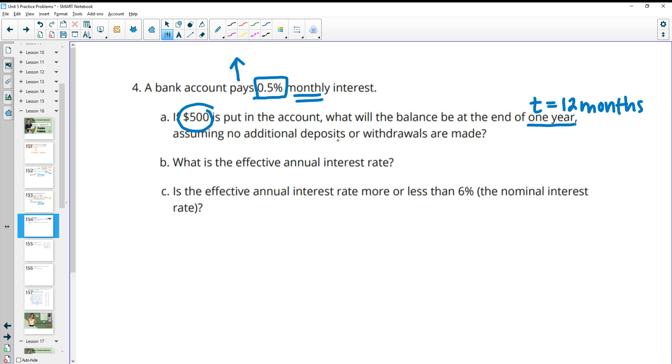So for this, we have the initial amount, 500. Then we want to take it times our growth factor to the 12th power for 12 months. So remember when we're looking at our growth factor here, we have this 0.5% that it's going up.